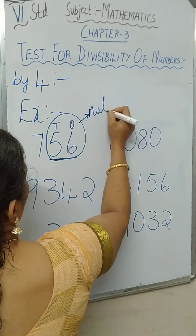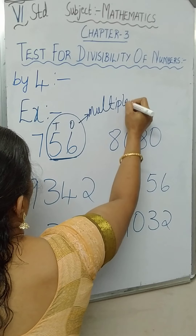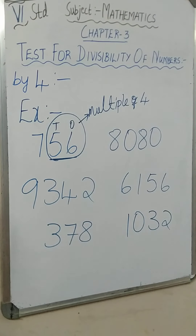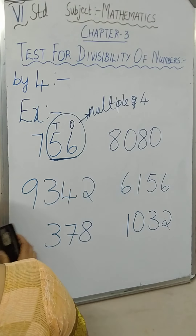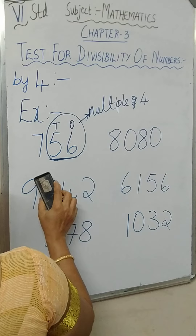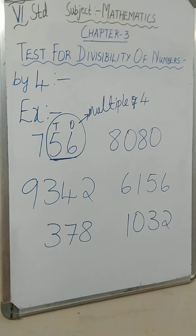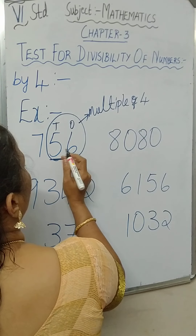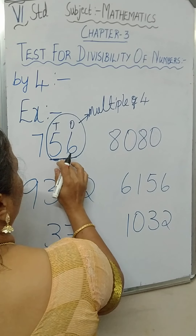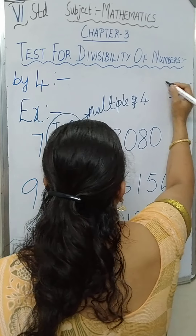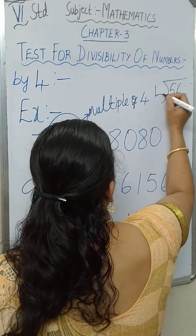Can you tell the multiples of 4? It is 4, 8, 12, 16, 20, 24, 32 — it goes like that. If you don't know whether it is a multiple of 4, you just divide it by 4.